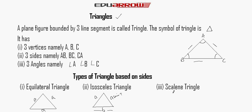Scalene triangle. A triangle whose every side is different is called the scalene triangle. This one has sides A, B, and C, all different.